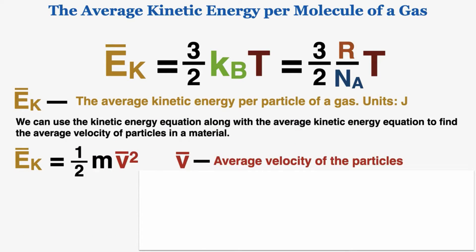We can use the kinetic energy equation along with the average kinetic energy equation to find the average velocity of particles in a material. Because kinetic energy is 1/2 mv², the average kinetic energy equals 1/2 times the mass of any one particle times the average velocity squared. In an ideal gas we assume all particles have the same mass, so this is just the mass of any single particle.